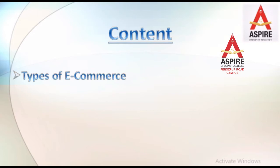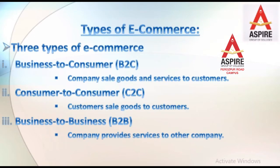Today we will talk about details of e-commerce. E-commerce has three types. The first type is business to consumer. Business to consumer's short form is B2C. This business is basically a company selling directly to a customer. This type of business, where a customer buys directly from a company, is called business to consumer.